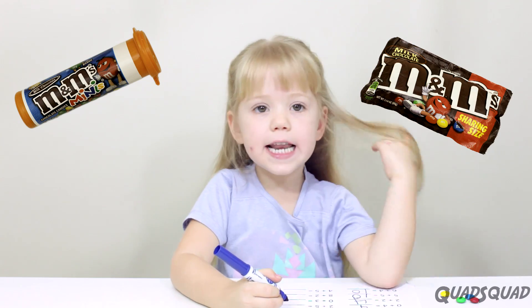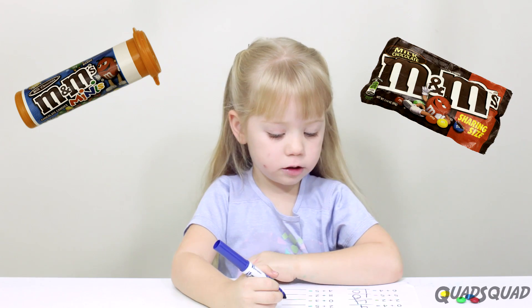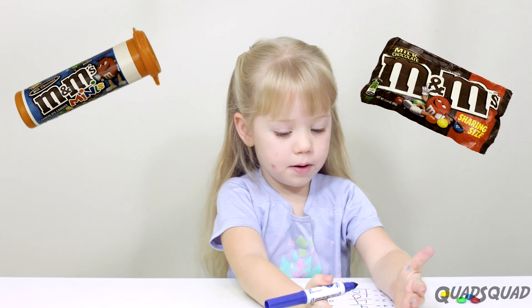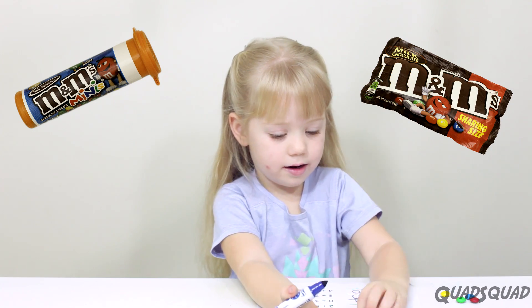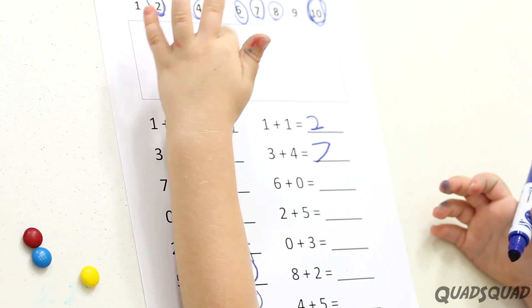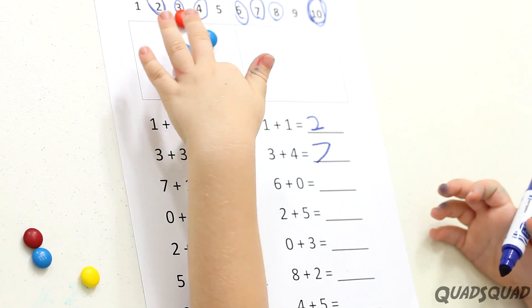Next question, what's six plus zero? So we put six on this side. One, two, three, four, five, six, seven, eight. Actually, there's eight, so we've got to take away.